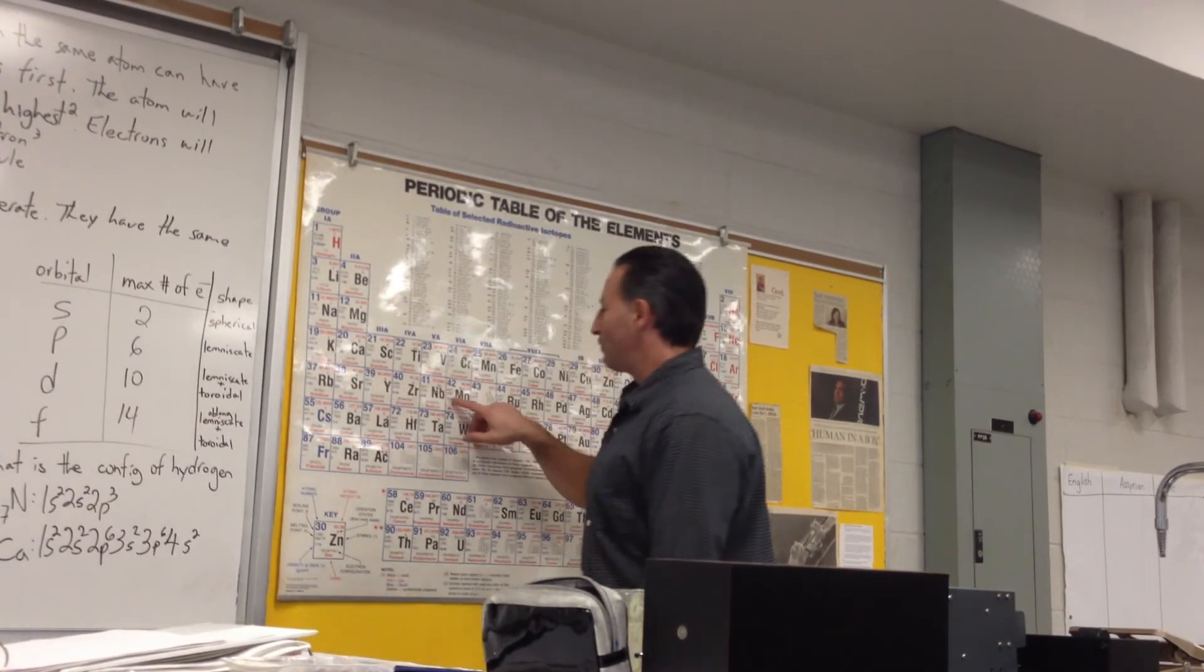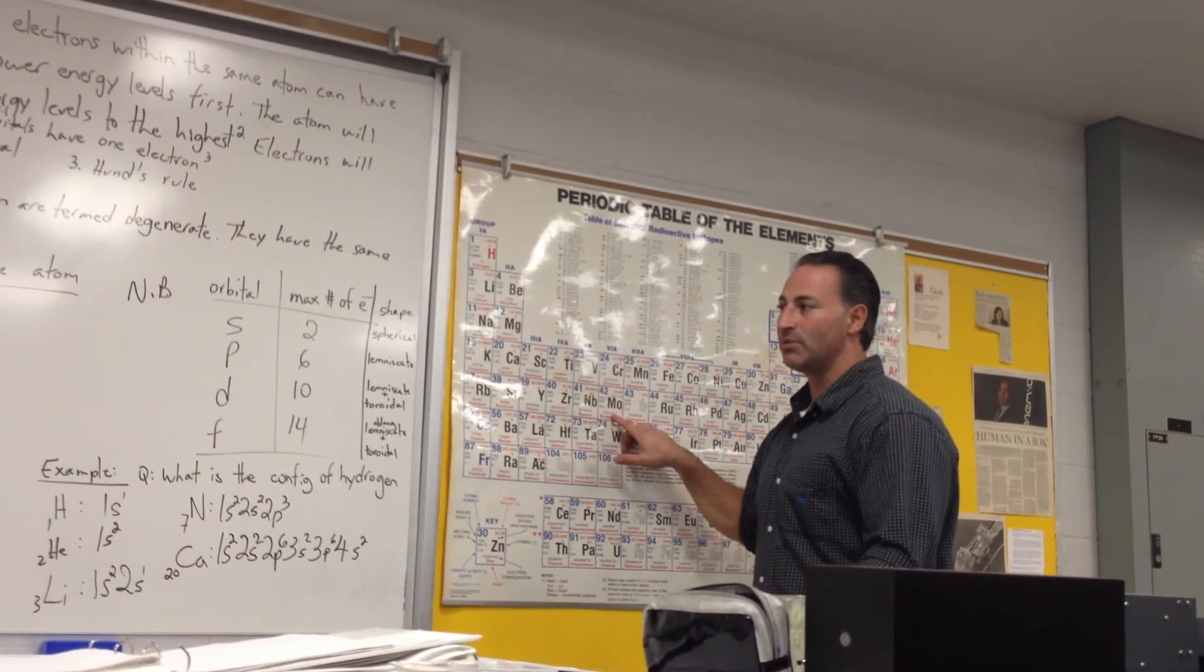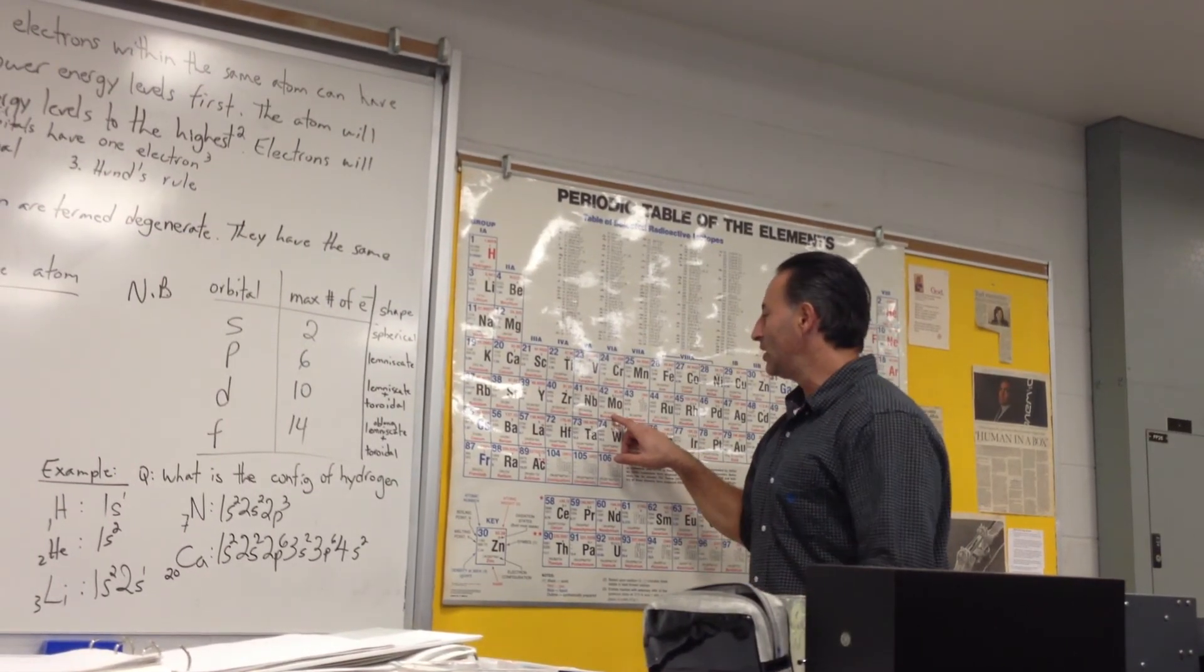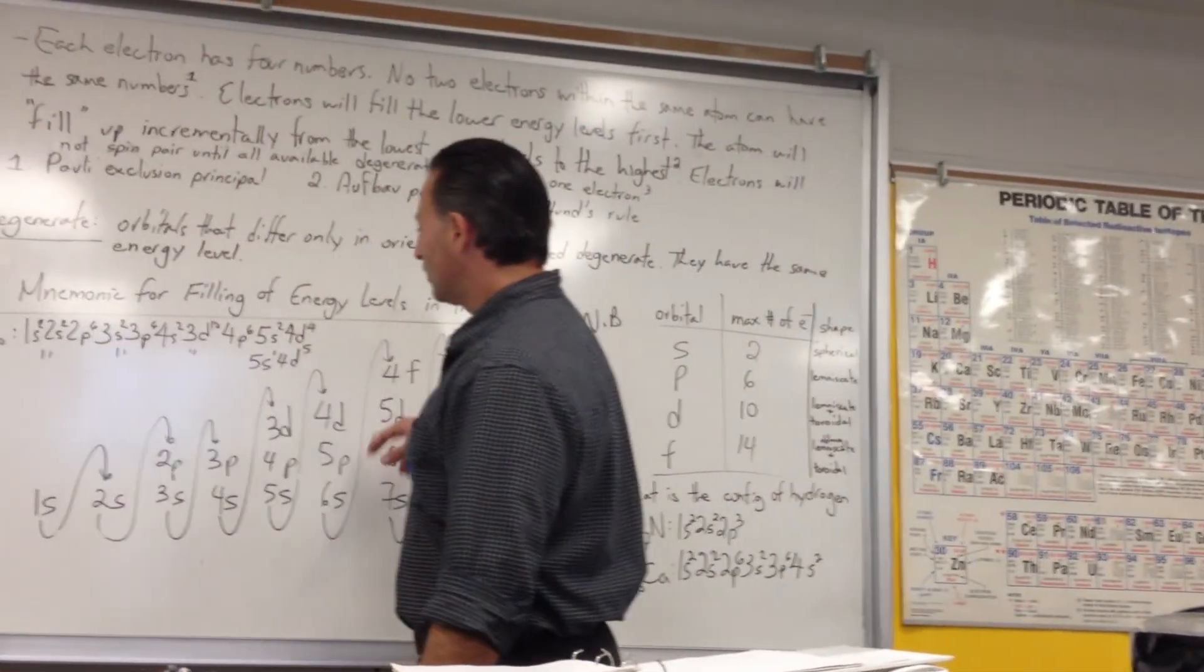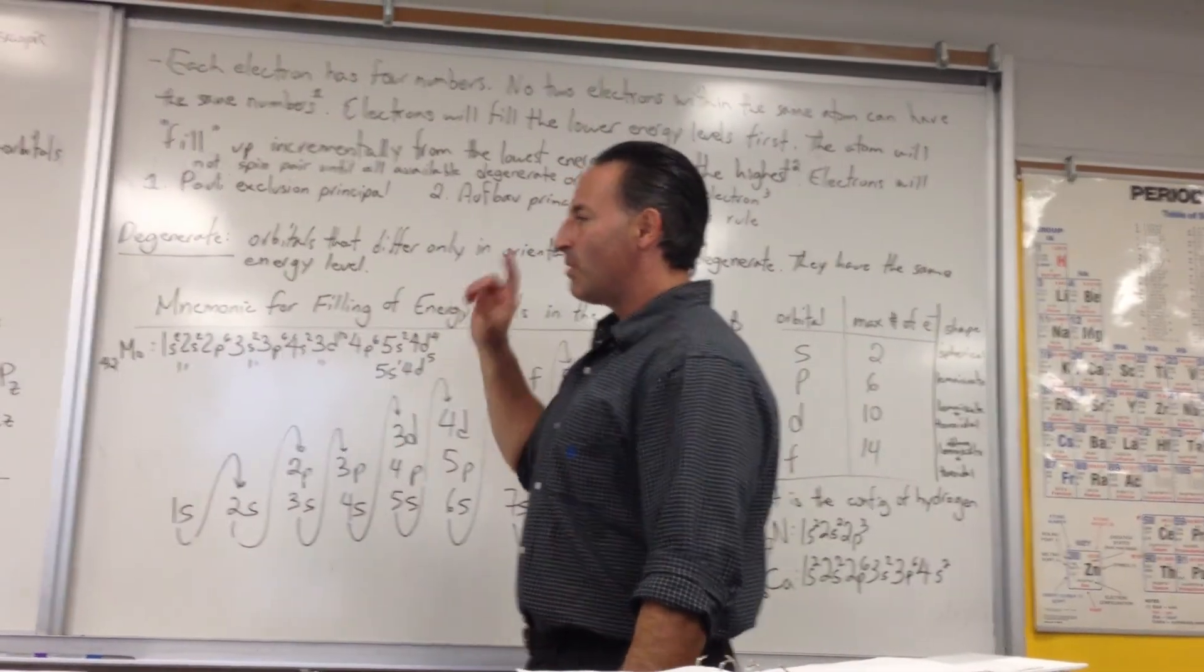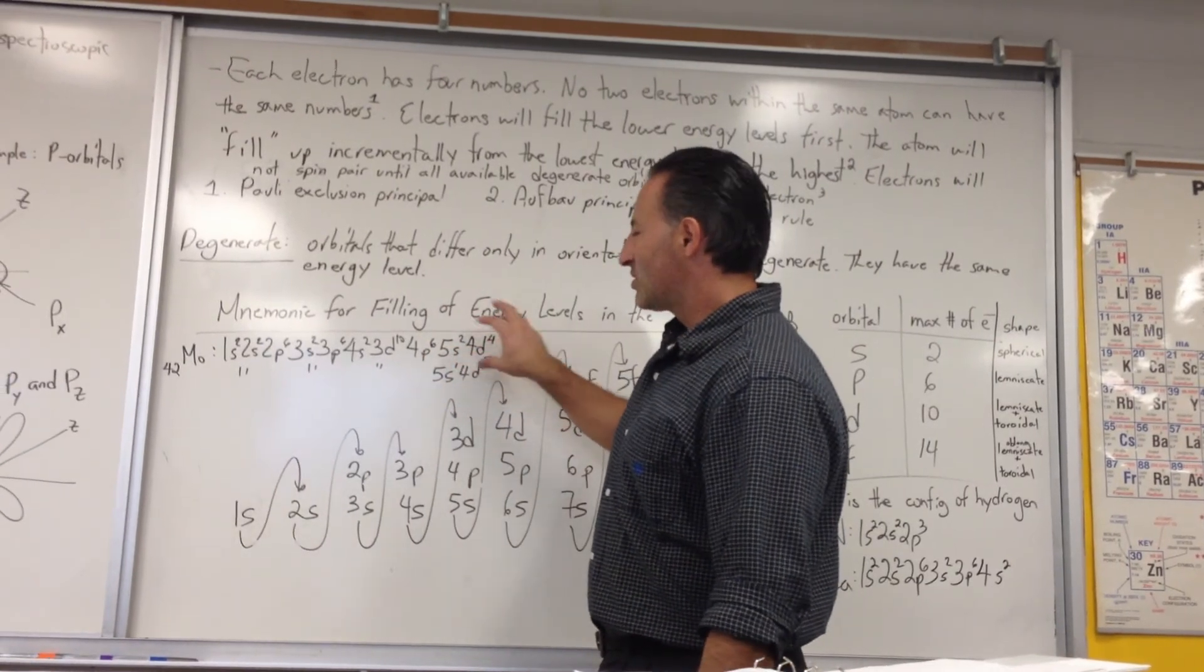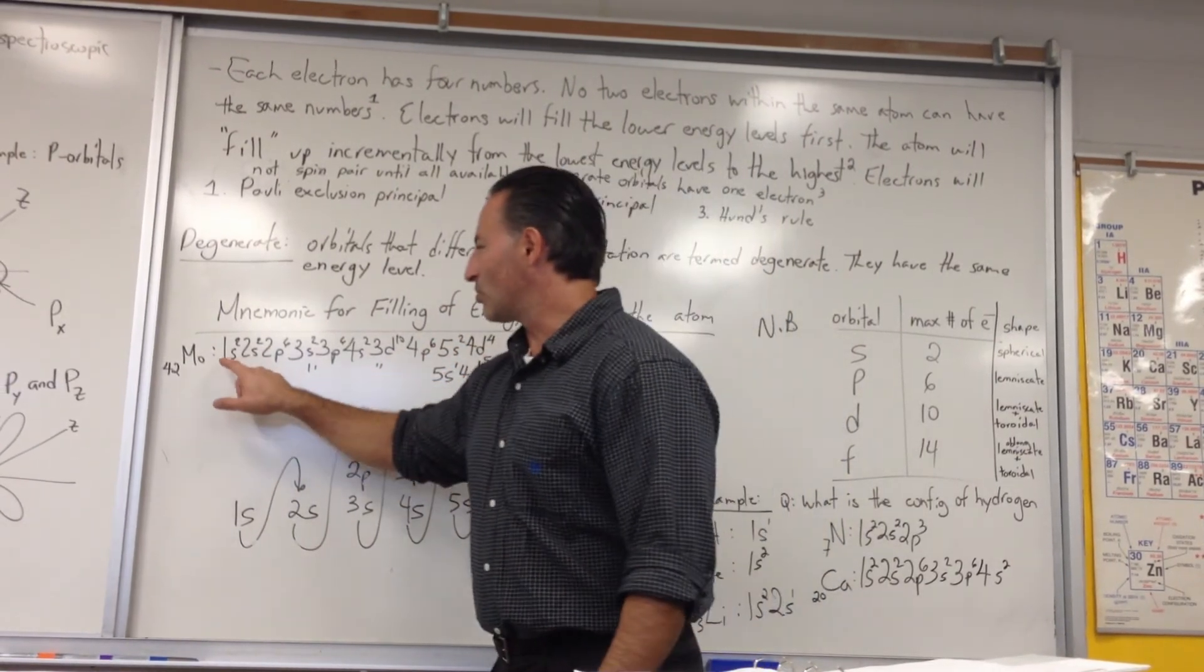So let's go back now and look at molybdenum. Molybdenum has 42 protons, and therefore neutral molybdenum will have 42 electrons. Let's look at the configuration. We'll follow the pattern, and we'll fill in all the electrons for molybdenum, but we'll see later on that it breaks the pattern a little bit.